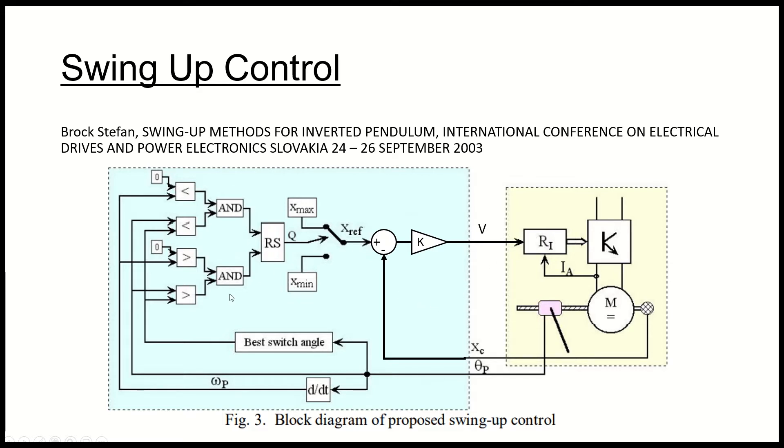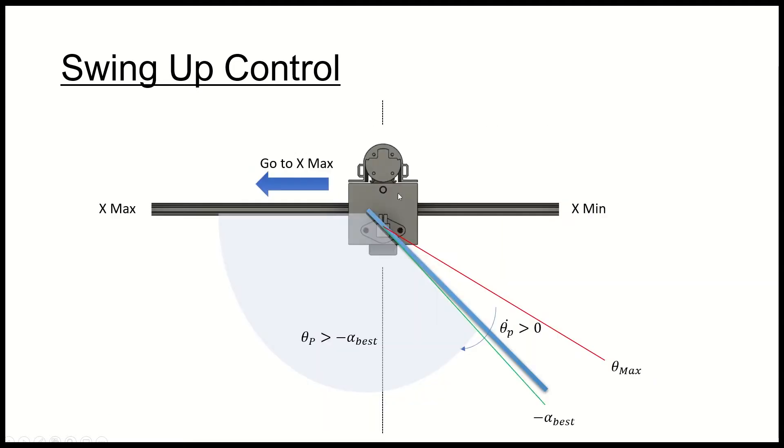I'll show you how this bit of logic works next. Basically from this diagram you can see the pendulum is in blue and what happens is it takes the angular velocity of the pendulum, and when it's negative as it is here, once it is greater than this alpha best that we compute which is a function of alpha max...